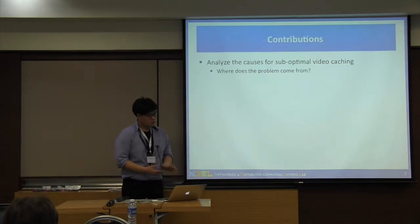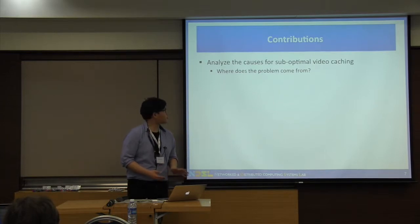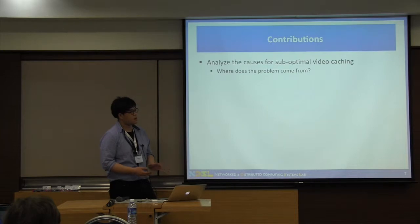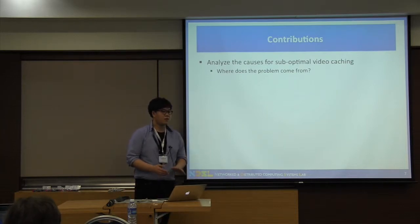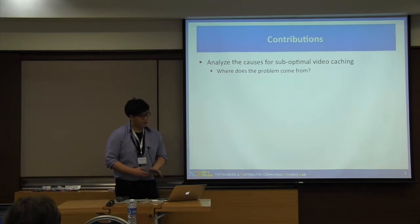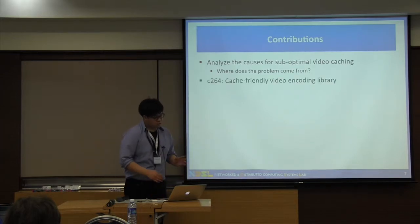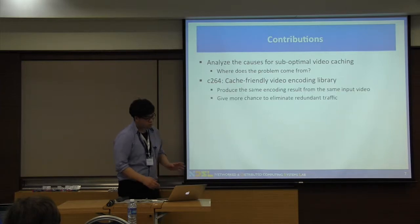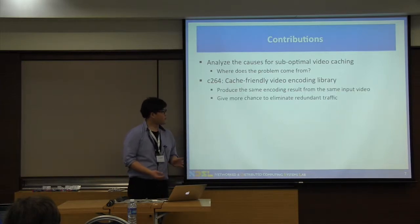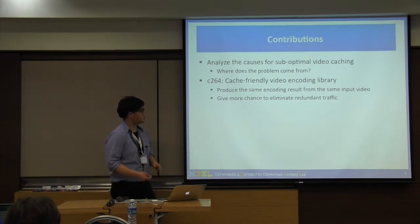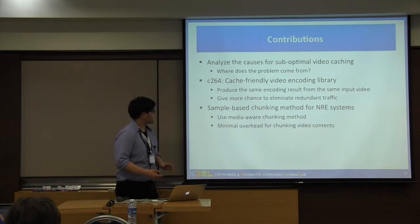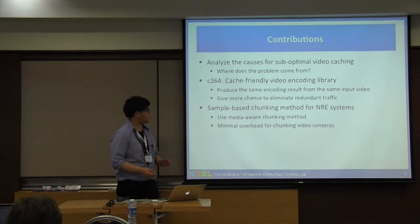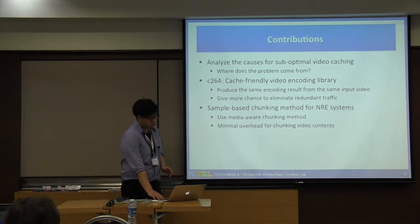Our work has three contributions. First, we analyzed the causes for suboptimal content-based caching and identified the possible causes for binary-level differences for the same content. Second, based on the analysis, we came up with a new cache-friendly recording scheme called C264, which is a cache-friendly video encoding library. It produces the same encoding result from the same input video, giving more chances to reduce traffic. Finally, we proposed a new chunking method that leverages the structure of the media and has minimal overhead for chunking media content.